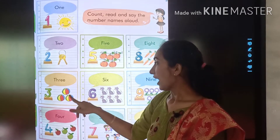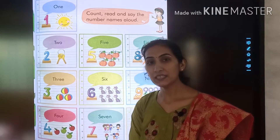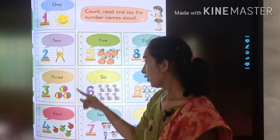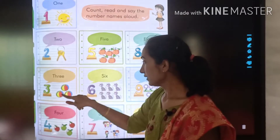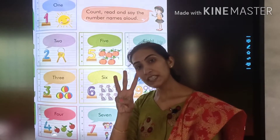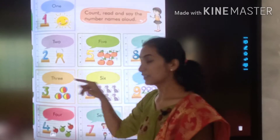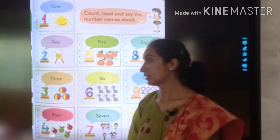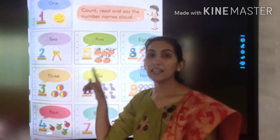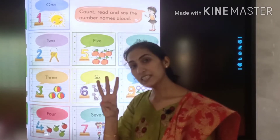How many balls can you see here? 1, 2, 3. There are 3 balls. T-H-R-E-E, 3.